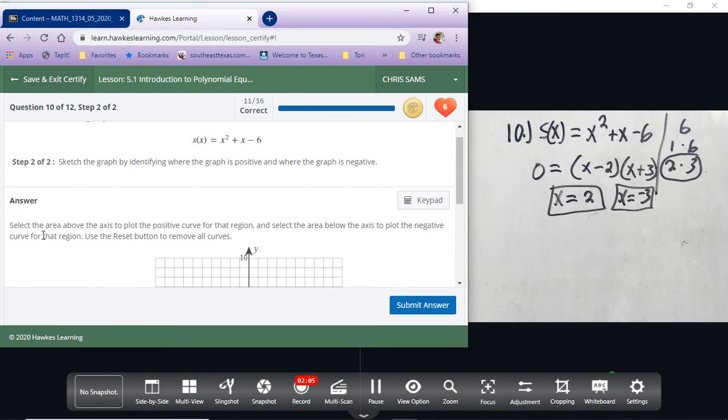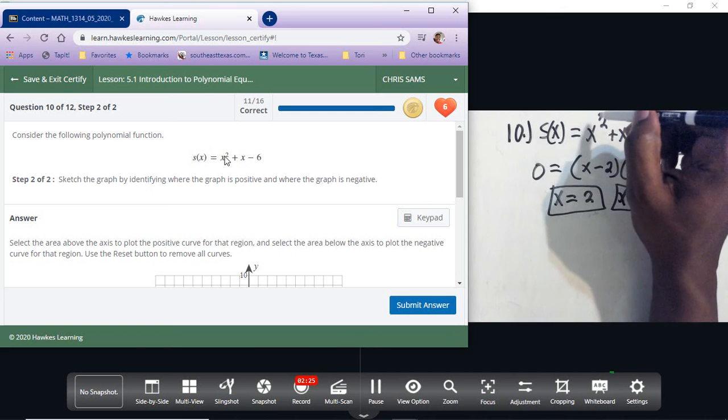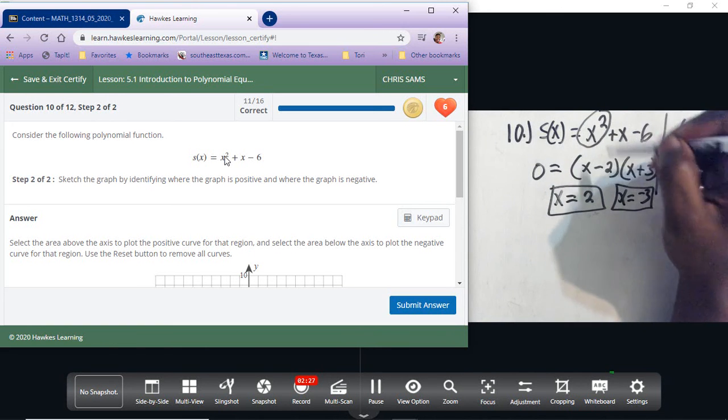And now step 3 says select the area above the x-axis to plot the curve for the region and select the area below the x-axis to plot the curve for that region. Okay, so I want to know what is our curve looking like. Because this is a positive, this front term, leading term is positive, that tells me my parabola is going to be opening upwards.